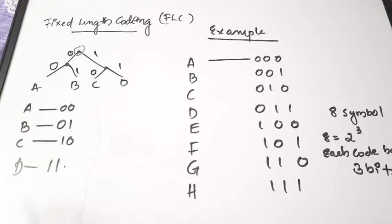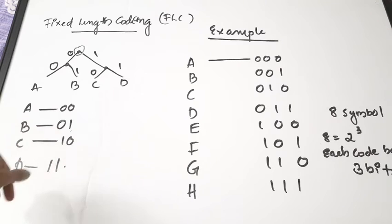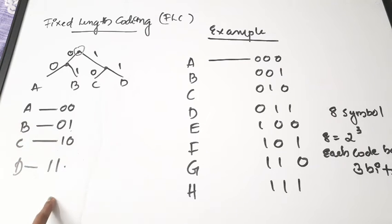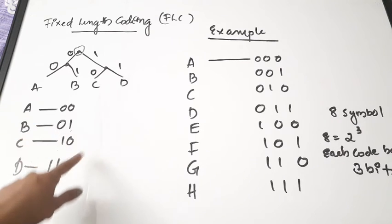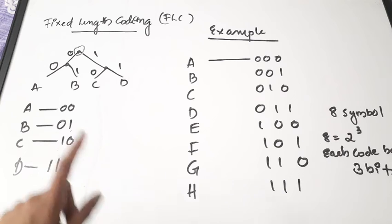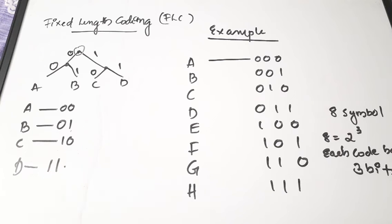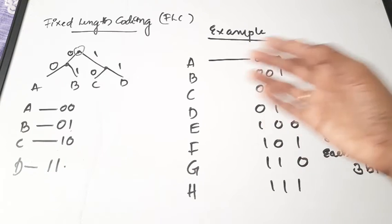As an example, codes 00, 01, 10, and 11 are the code words for A, B, C, and D, and all code words have two bits.